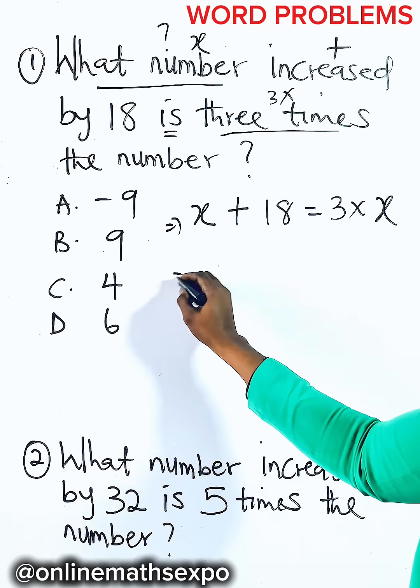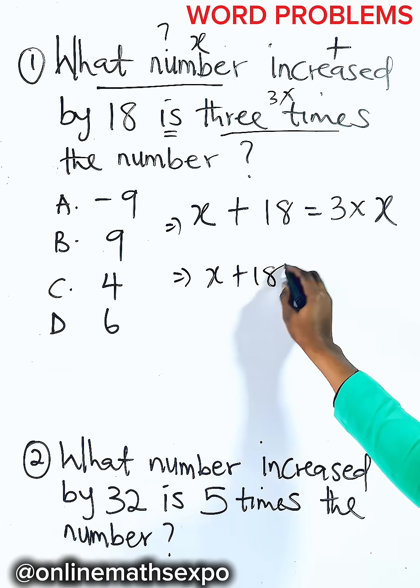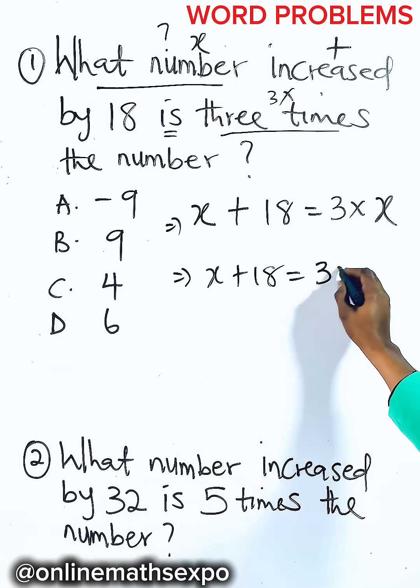So, it means you are going to have x plus 18 equals 3x.